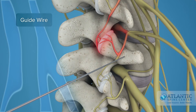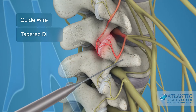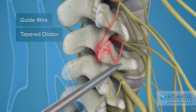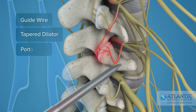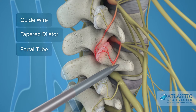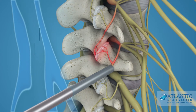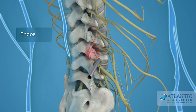The first step of the procedure is the insertion of a small guide wire near the nerve under x-ray control. A dilator, smaller than a pencil, is inserted over the guide wire. A small tube is inserted over the dilator to create a portal down to the nerve. Then a specially designed spine endoscope is used.